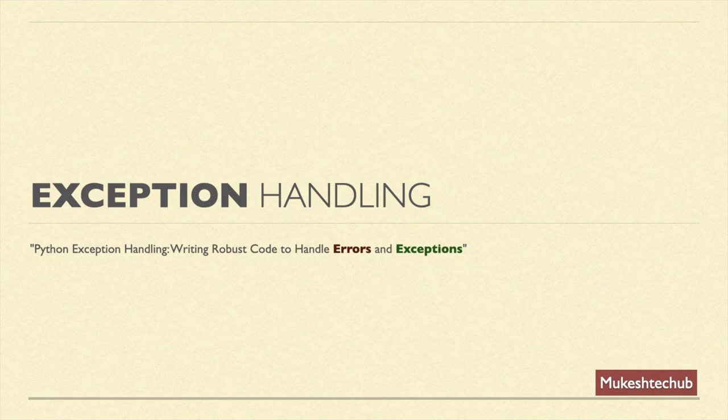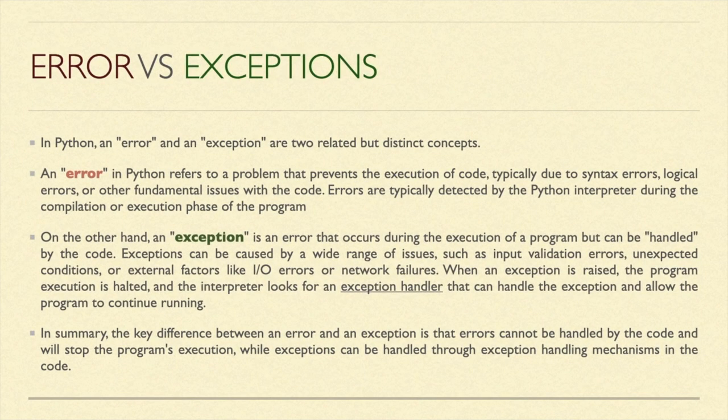Handling errors and exceptions in Python allows us to write robust code. We need to understand the key difference between errors and exceptions. An error is a problem that prevents the execution of code, typically due to syntax errors, logical errors, or other fundamental issues with the code.